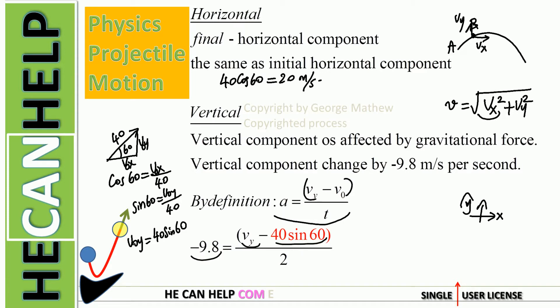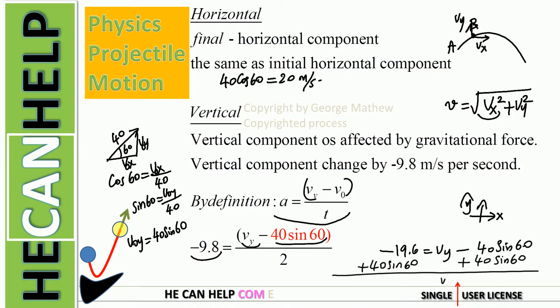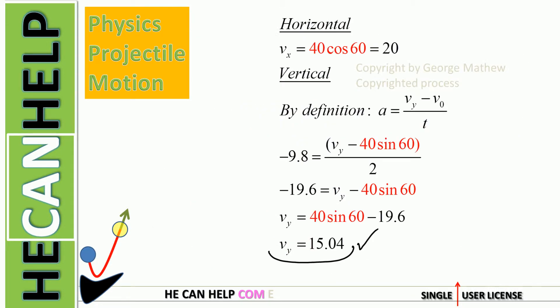Cross multiplying gives negative 19.6 equals vy minus 40 sine 60. Adding 40 sine 60 to both sides, we get vy equal to 15.04 meters per second. We also have vx equal to 20 meters per second.